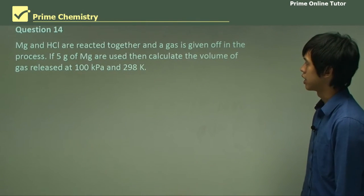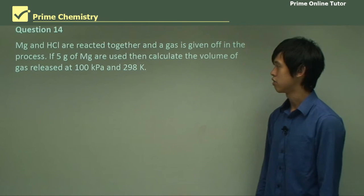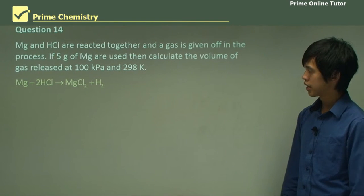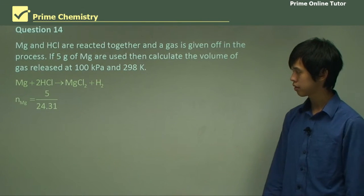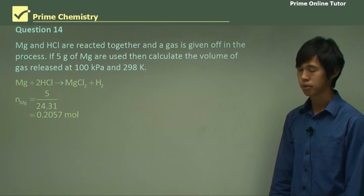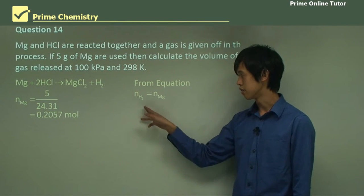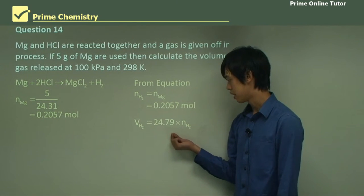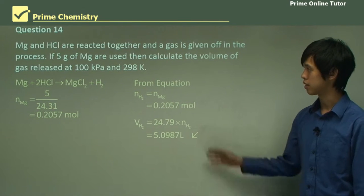So magnesium and hydrochloric acid are reacted together, and a gas is given off in the process. If 5 grams of magnesium are used, then calculate the volume of gas released at 100 kilopascals and 298 Kelvin. So we start with the chemical equation. And there it is. It's just acid plus a metal gives you salt plus hydrogen gas. So N_Mg, so the number of moles of magnesium, is just 5 over 24.31, which is 0.2057 moles. And from our equation, we know that the number of moles of hydrogen is equal to the number of moles of magnesium, which is 0.2057. And so the volume is just 24.79 times the number of moles, which is 5.0987 liters. So that's that question.